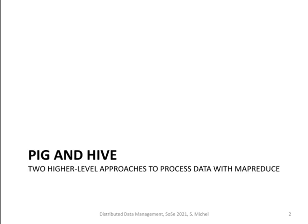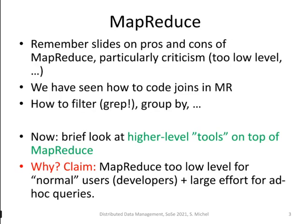When MapReduce was first introduced, it was a big success because it offered two simple functions — map and reduce — and everything else would be handled by the processing environment, such as Hadoop. Data scientists could write just these two functions without worrying about fault tolerance or efficient processing. However, for more complicated tasks like ngram mining or joins, you have to think carefully about how to arrange map and reduce to achieve your goal.